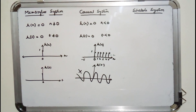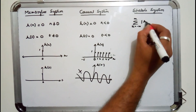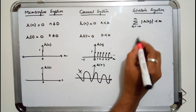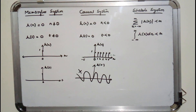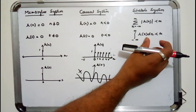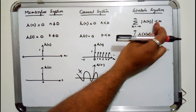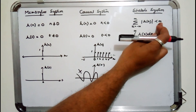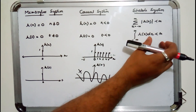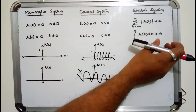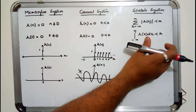A system is said to be stable if the impulse response is absolutely summable: the sum of |h[k]| is less than infinity, and the integral of |h(τ)| dτ is less than infinity. This means the impulse response is convergent — it converges to a value which is less than infinity, giving a finite value. For a continuous time signal, if you integrate the impulse response from minus infinity to plus infinity and it converges, similar to Fourier transforms, then the system is stable.